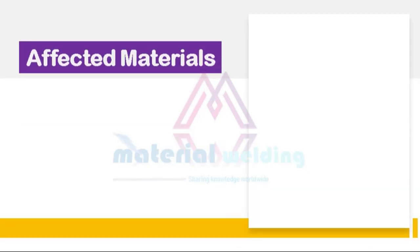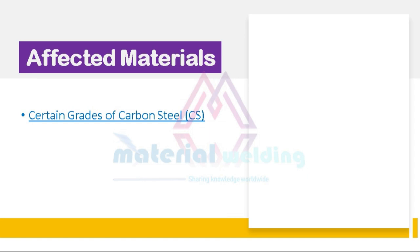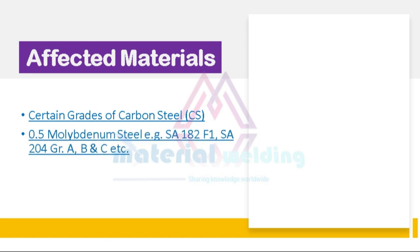Let us know which materials are affected by graphitization. It occurs in certain grades of carbon steel and 0.5 molybdenum steel, such as SA 182 F1 or SA 204 Grade A, B, and C, etc.